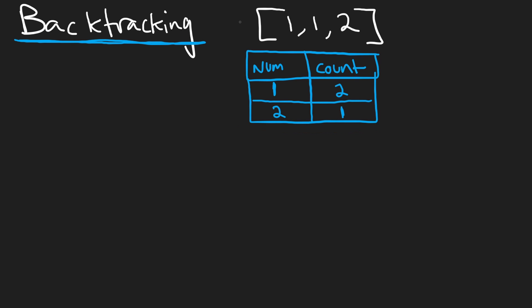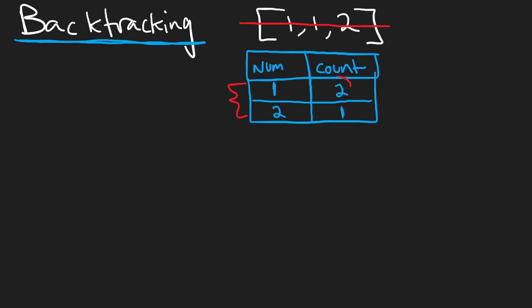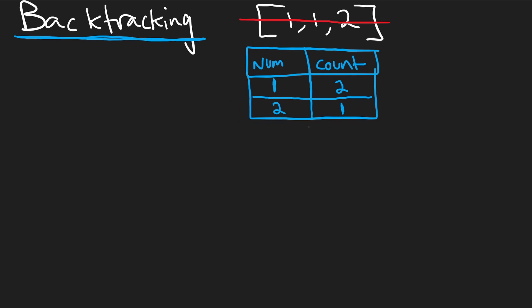We take each number from the original array and count its occurrences. So we had two ones in our input, and one two. With this hash map, we eliminated duplicates as keys — we only have two unique numbers — but we didn't get rid of anything completely because we counted how many of each we had. Now with this map, I'm going to build the backtracking decision tree.